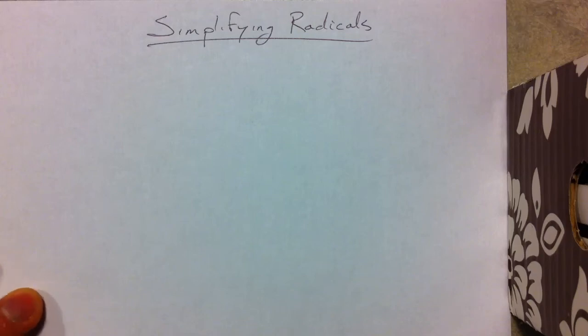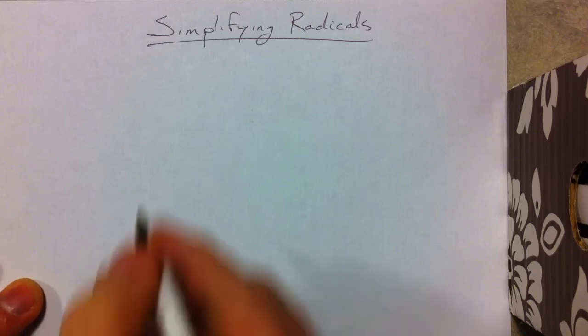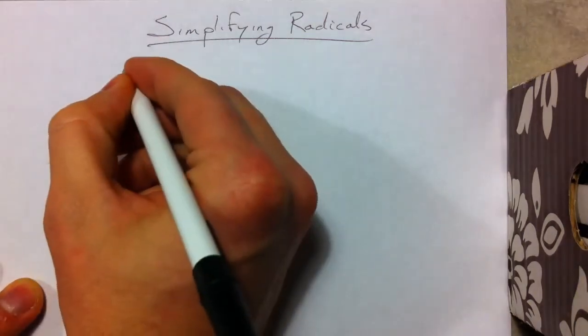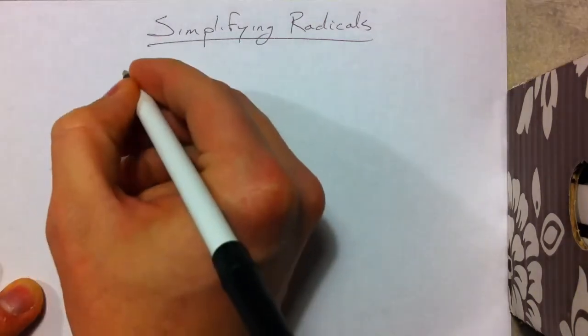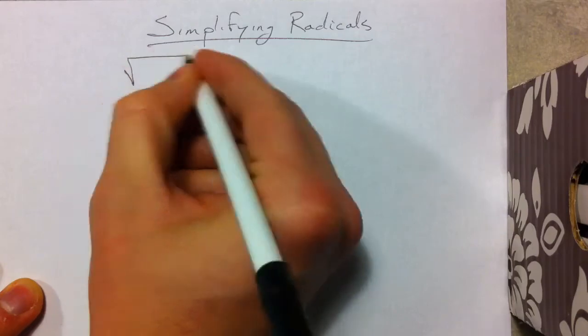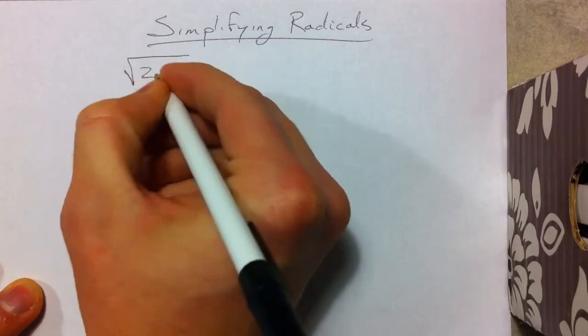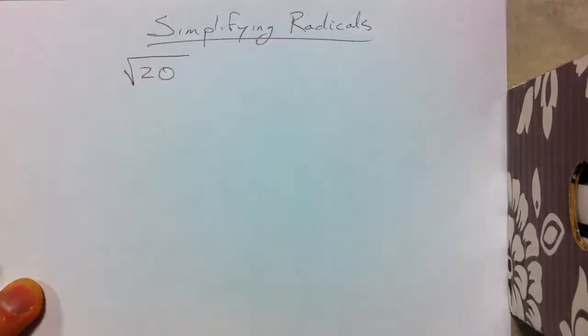We're going to talk about simplifying radicals, and to review a little bit, we'll take and simplify the square root of 20.